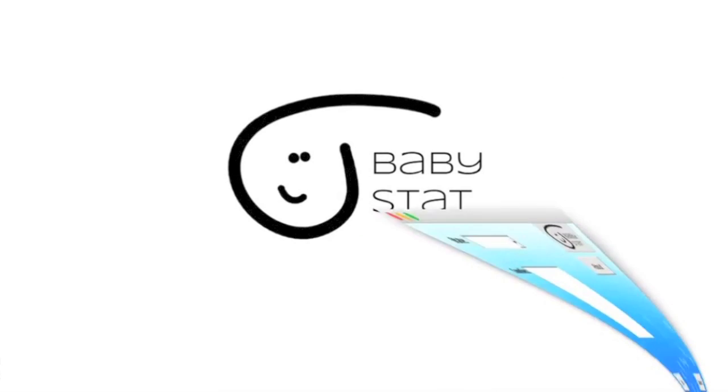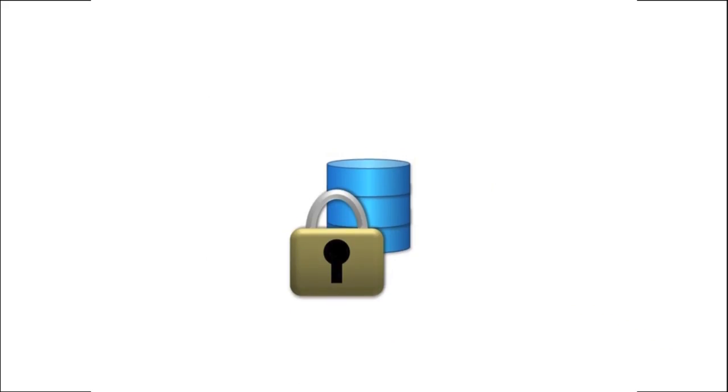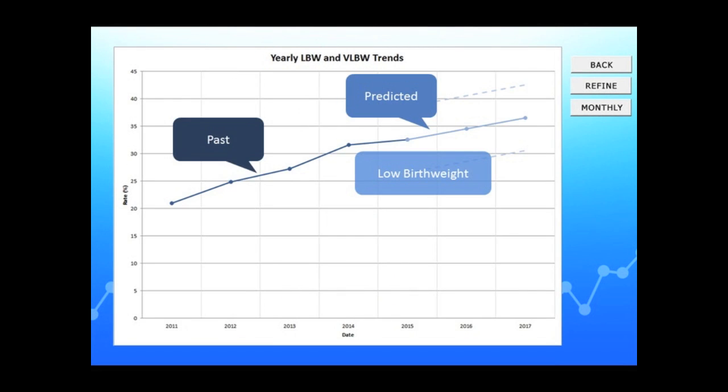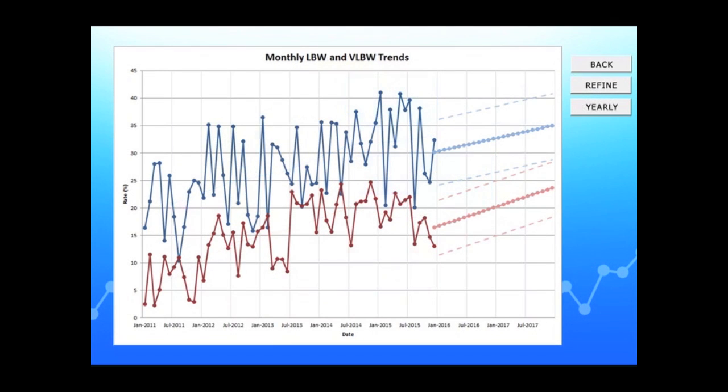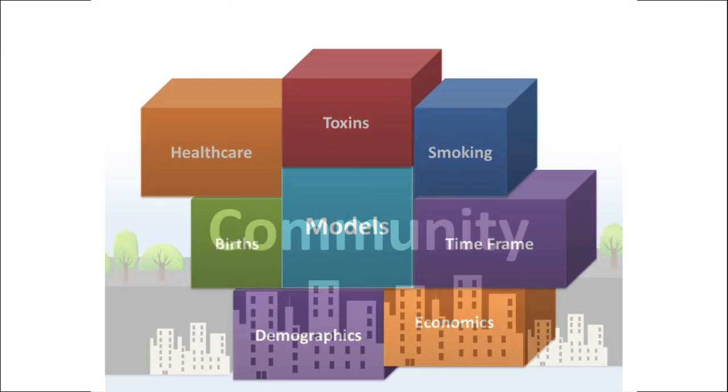The solution involves a friendly user interface that can be accessed for free on the web, a secured back-end server to host data, and the ability to display past and predicted low birth weight and very low birth weight rates on both a yearly and monthly basis. These predictions are calculated through models that determine the impact of environmental factors within a community.